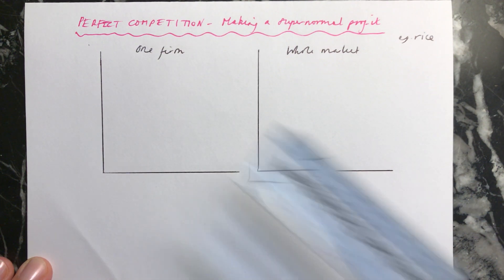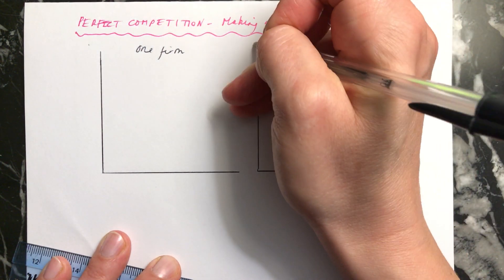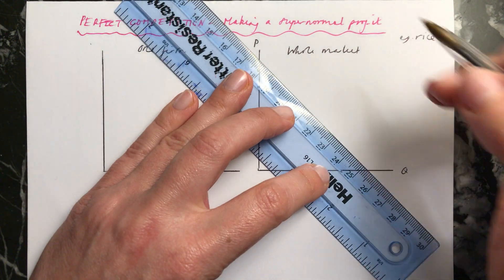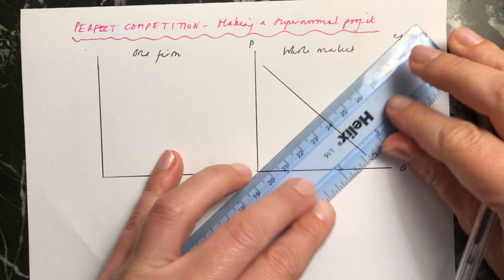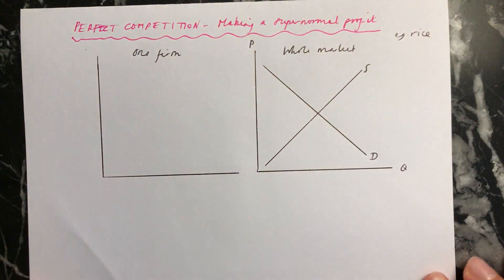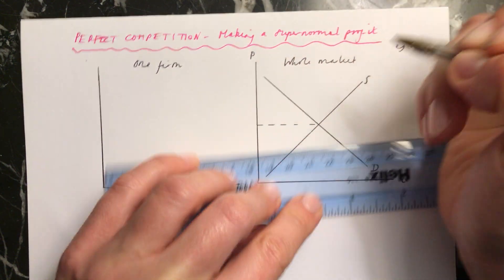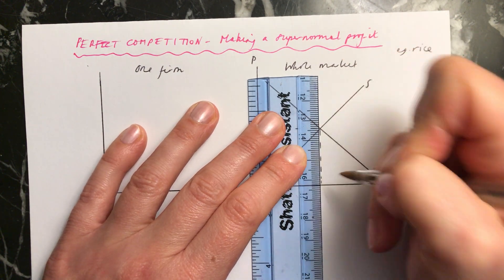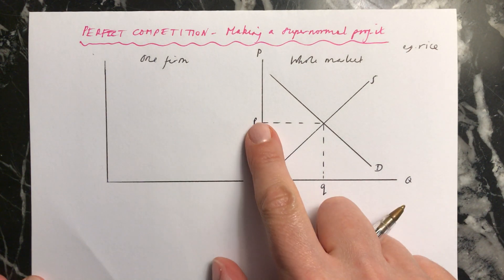We need to start off by finding out what the price is in the market. We've got price and quantity — just a normal demand and supply diagram. This is D for demand, and this is supply. To find out our price we just get the equilibrium here. This is our quantity — all the suppliers and all the consumers demanding the product in the market — and this is the equilibrium price.